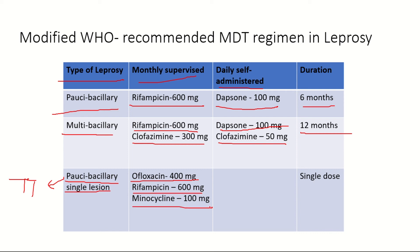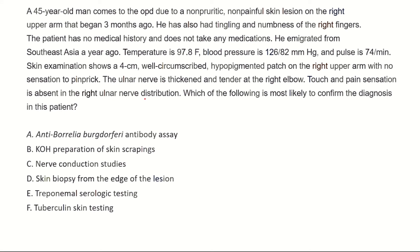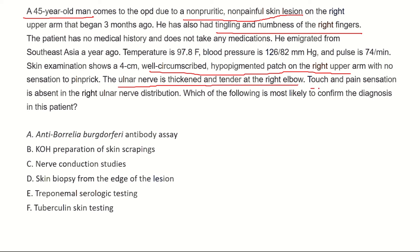Now let's come back to the question. A 45-year-old man has non-pruritic, non-painful skin lesions, with tingling and numbness of the right fingers, well-circumscribed hypopigmented patches on the arms, thickening of the ulnar nerve and tenderness at the right elbow, and loss of touch and pain sensation. The question asks which finding is most likely to confirm the diagnosis. All these clinical features suggest leprosy, confirmed through skin biopsy from the edge of the lesion, using Ziehl-Neelsen staining for acid-fast bacilli.